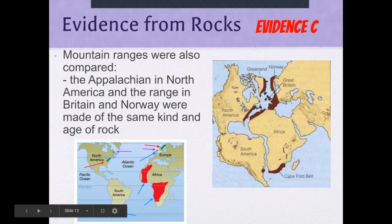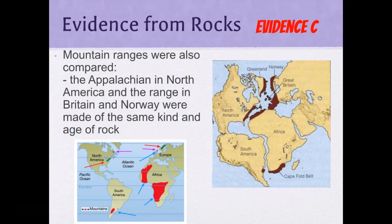Evidence C: mountain ranges were also compared. Notice how the mountain ranges of North America match those in Norway and the northern part of Africa and Europe — and the ages of these mountains are the same. So scientists concluded that these landmasses must have been together at some point.